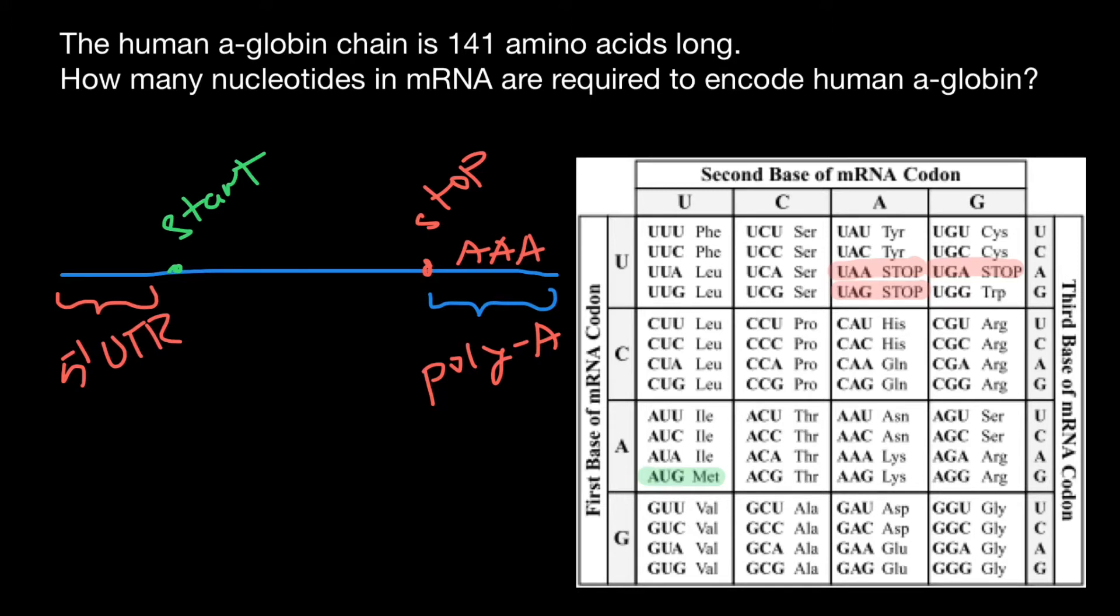Don't think that only one ribosome would attach here and make only one amino acid chain. Multiple ribosomes would be attached and would make multiple amino acid chains. This poly-A tail specifies how stable this messenger RNA would be and how many proteins would be made.